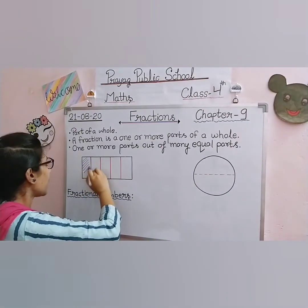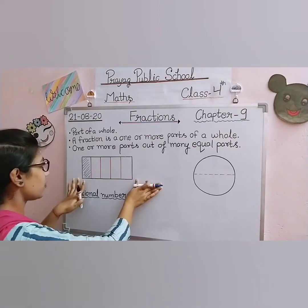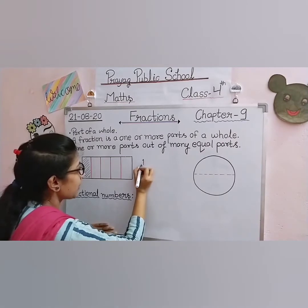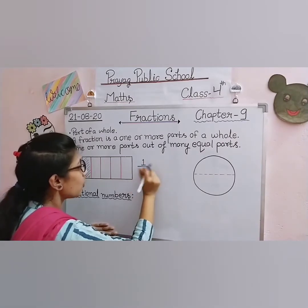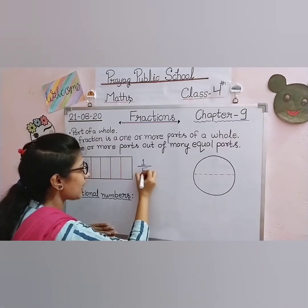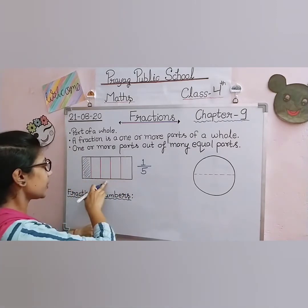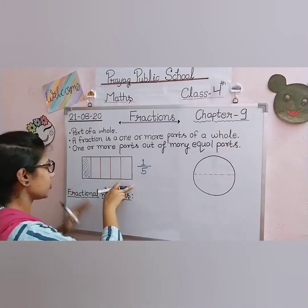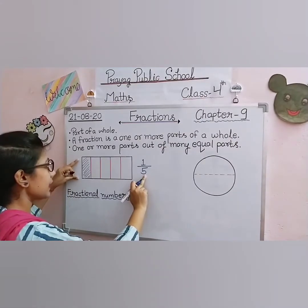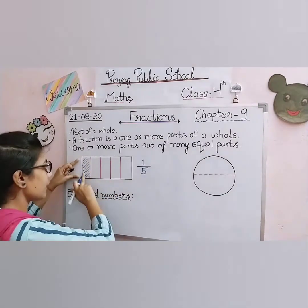If I shade one part of this rectangle, how do we write it in fractional form? Only one part is shaded, so we write it as one upon something. We also studied numerator and denominator — the number above the slash is the numerator and the number below is the denominator. In the denominator we write the total number of parts. This figure has five equal parts, so the denominator is five. The numerator depends on what is asked.